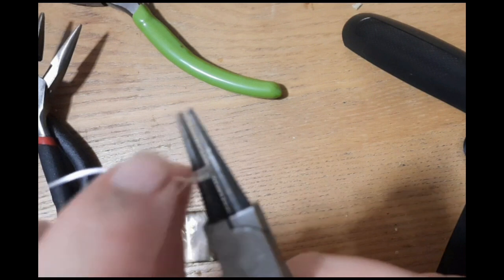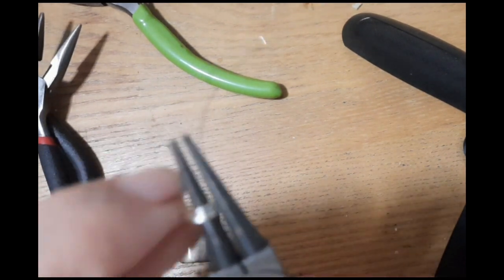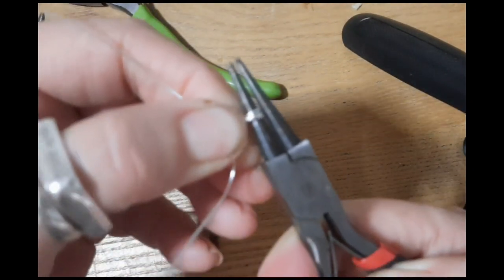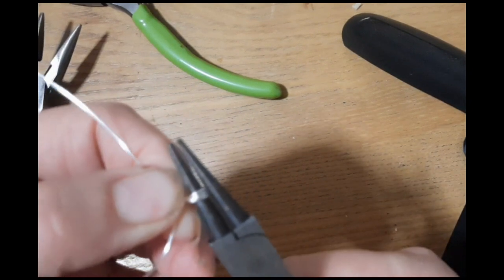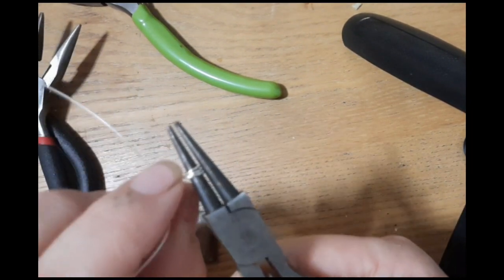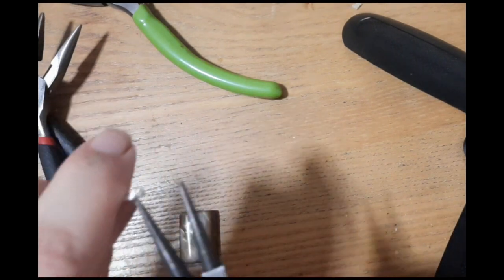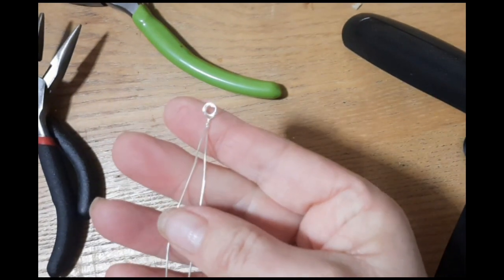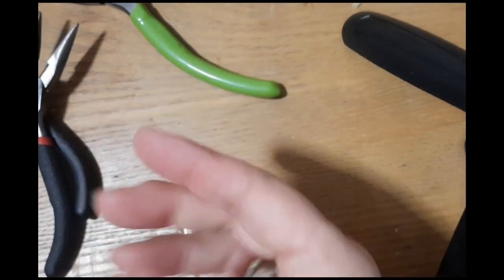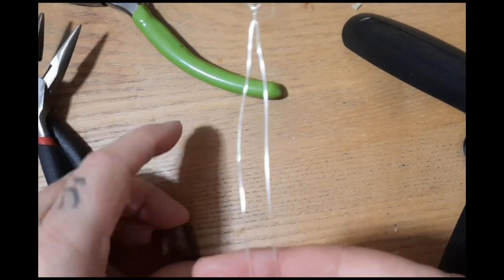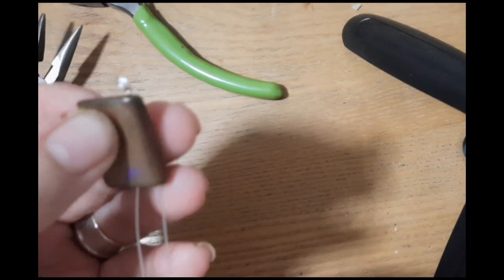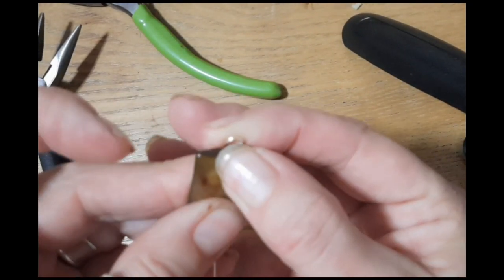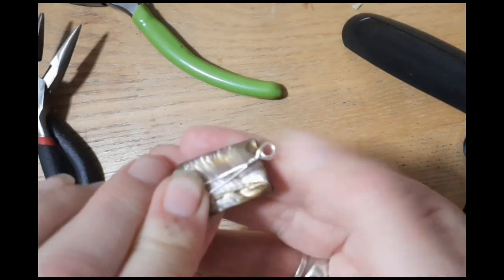And then we want to lock that in place, so wrap it a few times. Then we have the loop. So grab your piece of shell or rock or whatever it is you're practicing on, and pop the wire down the back.